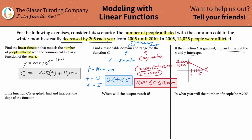It says find and interpret the y-intercept. So the y-intercept is going to be 12,025, and that just represents the number of people afflicted with the cold at the start, in the year 2005.